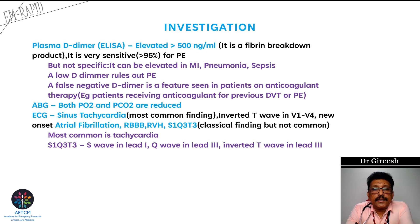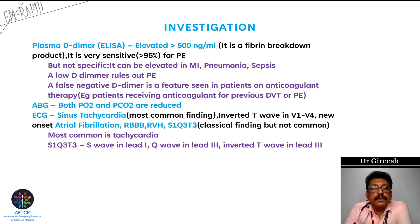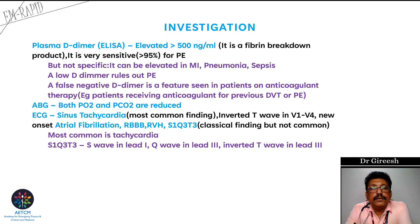When investigating pulmonary embolism in the ER, if the patient is sick, always manage airway, breathing, and circulation first, then proceed to investigation. One of the most important tests in ER is D-dimer. D-dimer can be positive in many other conditions, but if D-dimer is negative, you can possibly rule out pulmonary embolism. For example, D-dimer is also positive in acute myocardial infarction, but a negative D-dimer helps exclude PE.